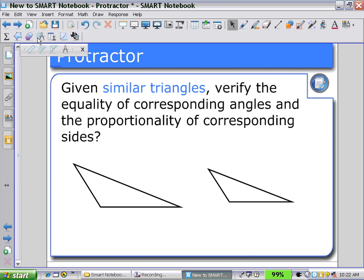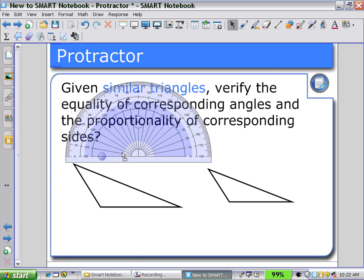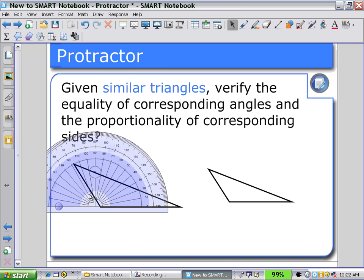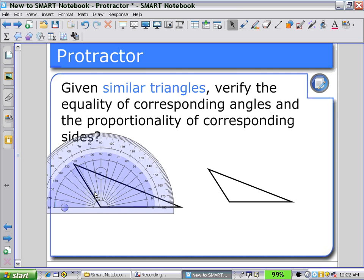Now clicking on the measurement tool icon again and selecting the protractor from the secondary toolbar. Holding the dark shaded region, I can move my protractor and place it anywhere in the workspace, at a vertex of one of the triangles.